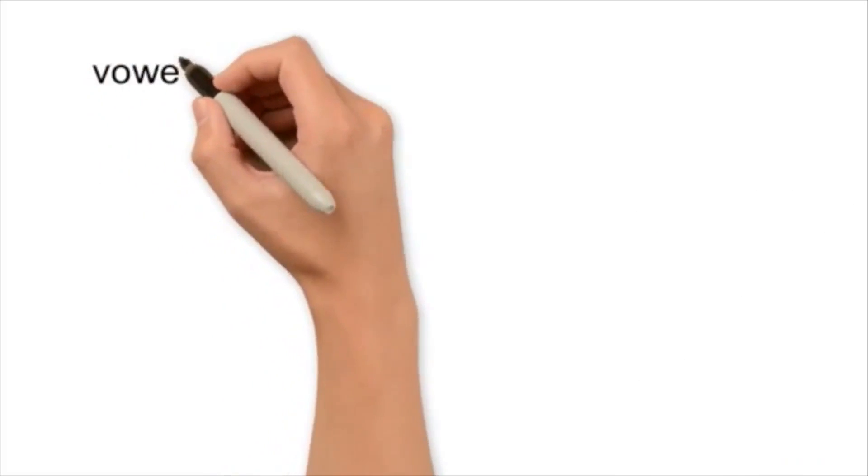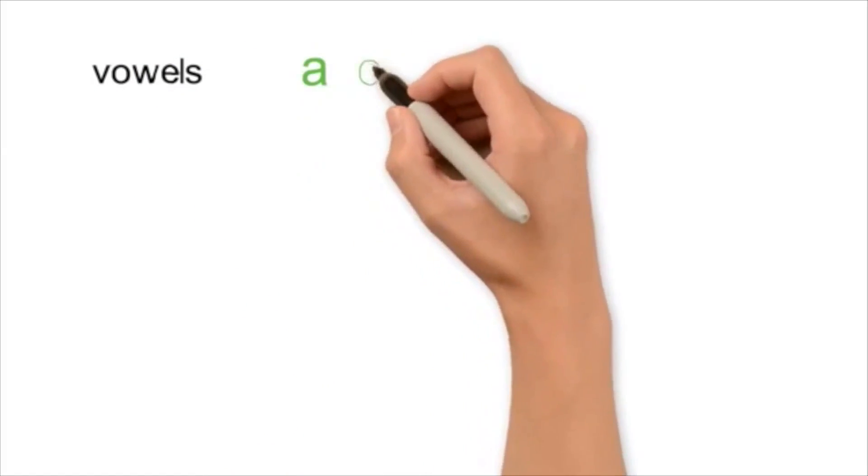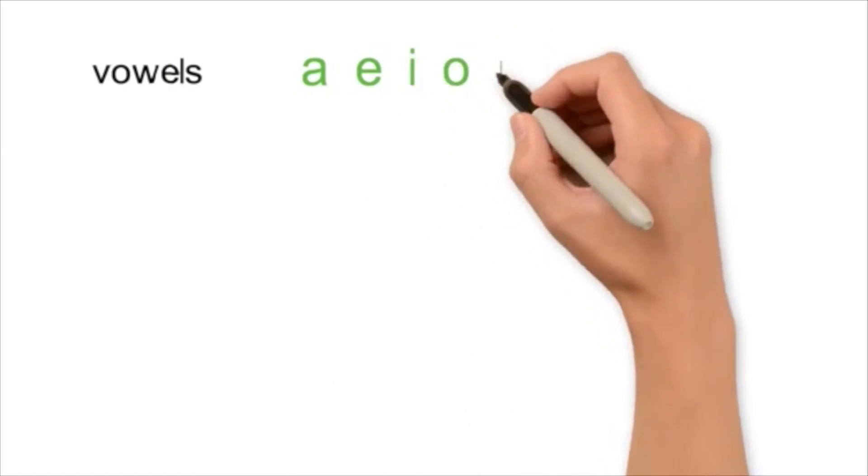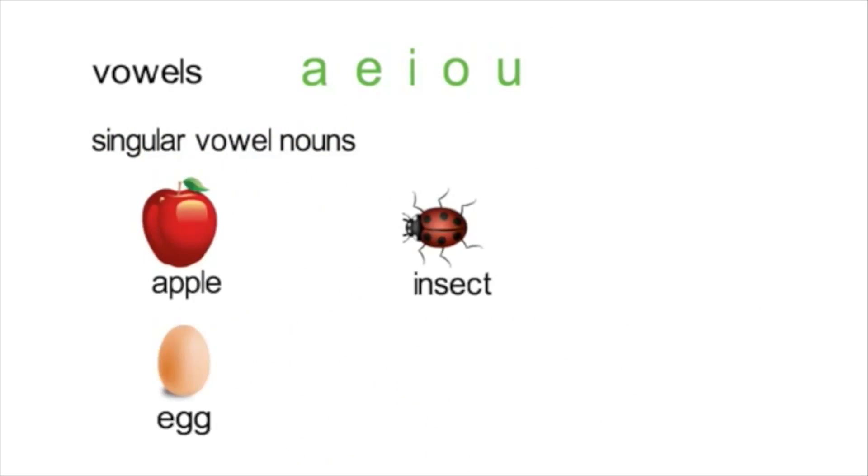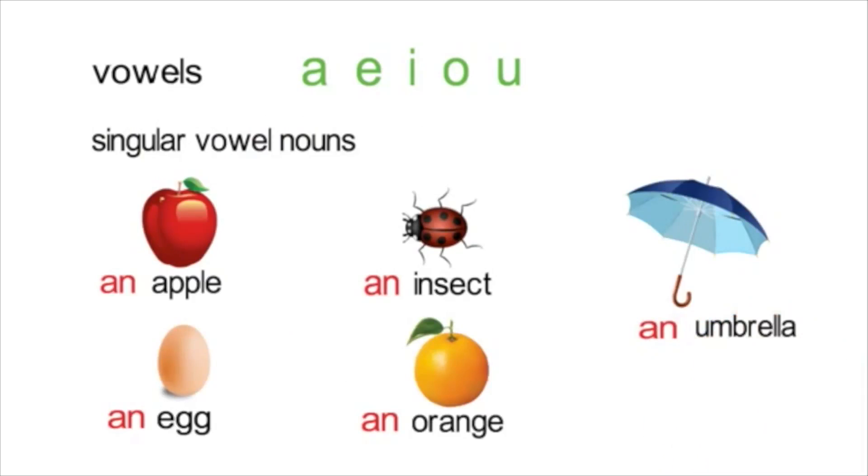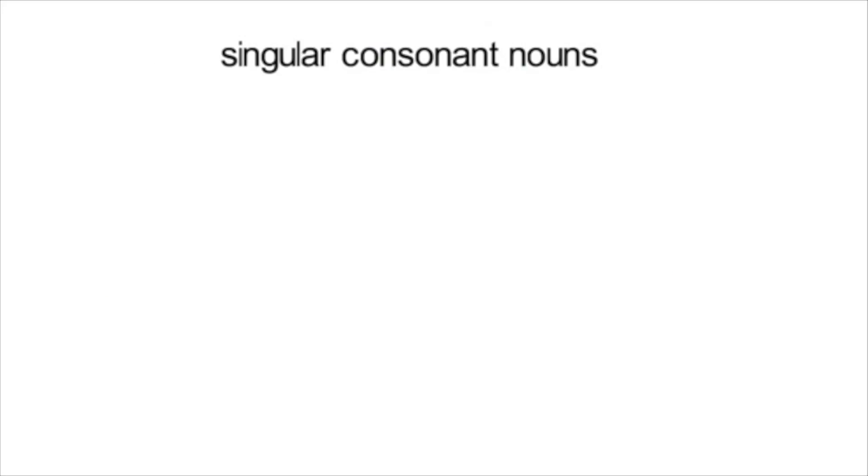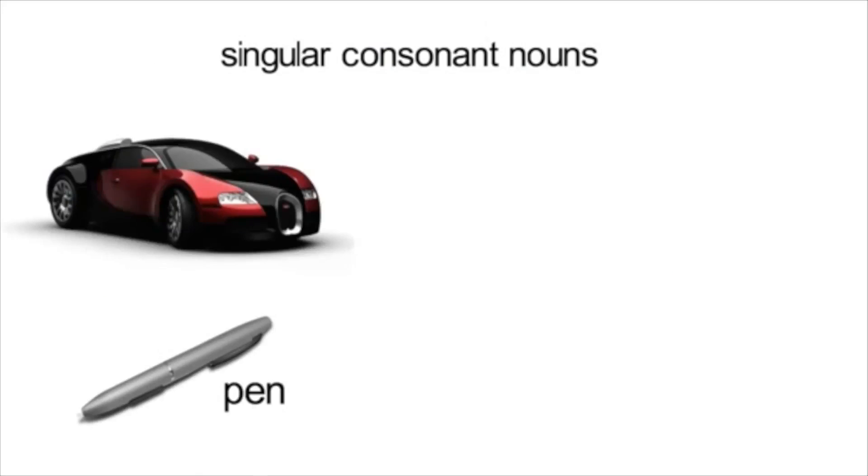If a noun begins with a vowel, which is a, e, i, o or u, then a singular noun often has an in front of it. But if it begins with a consonant, then it has an a in front of it.